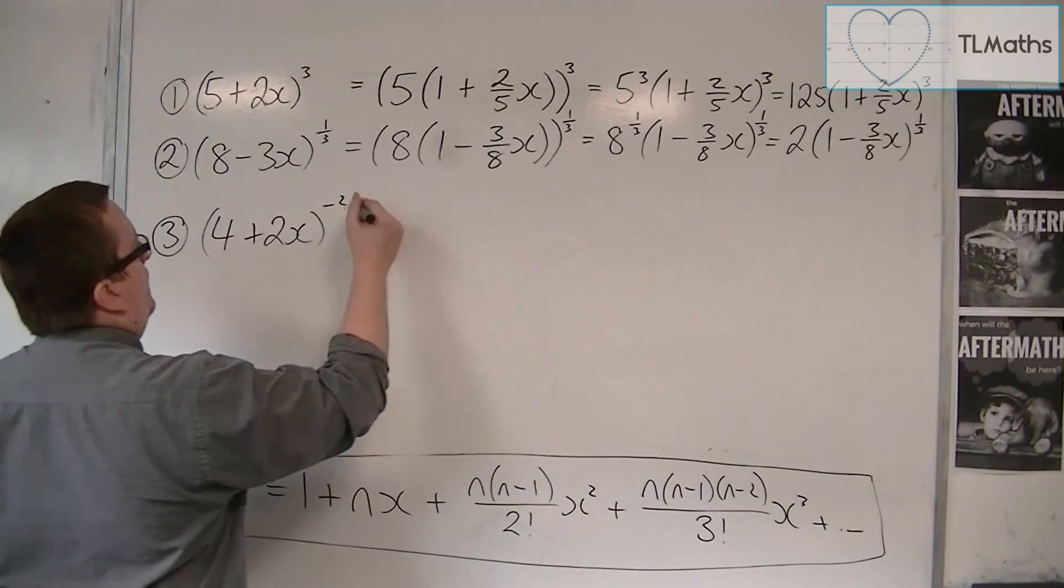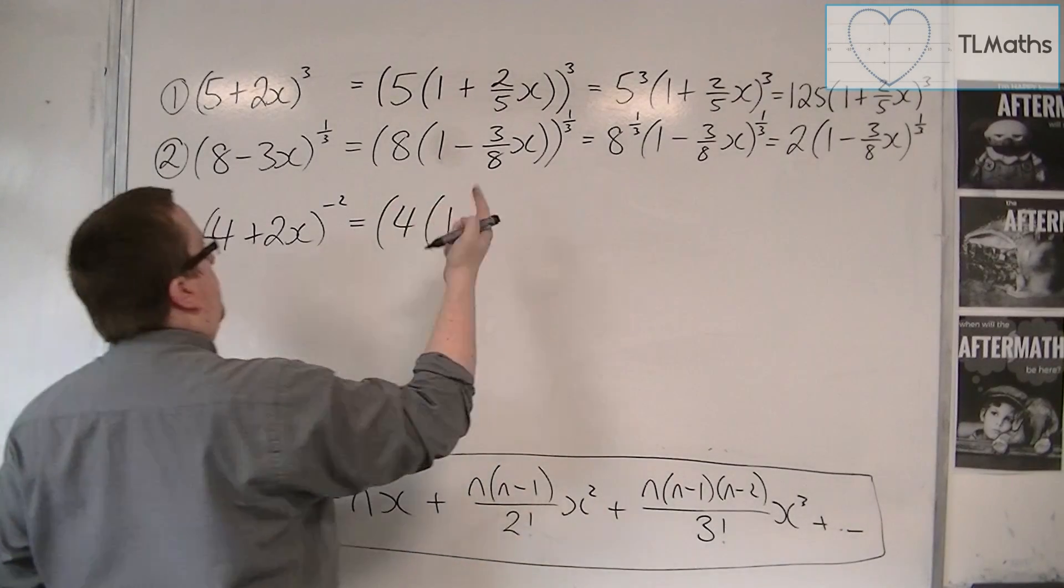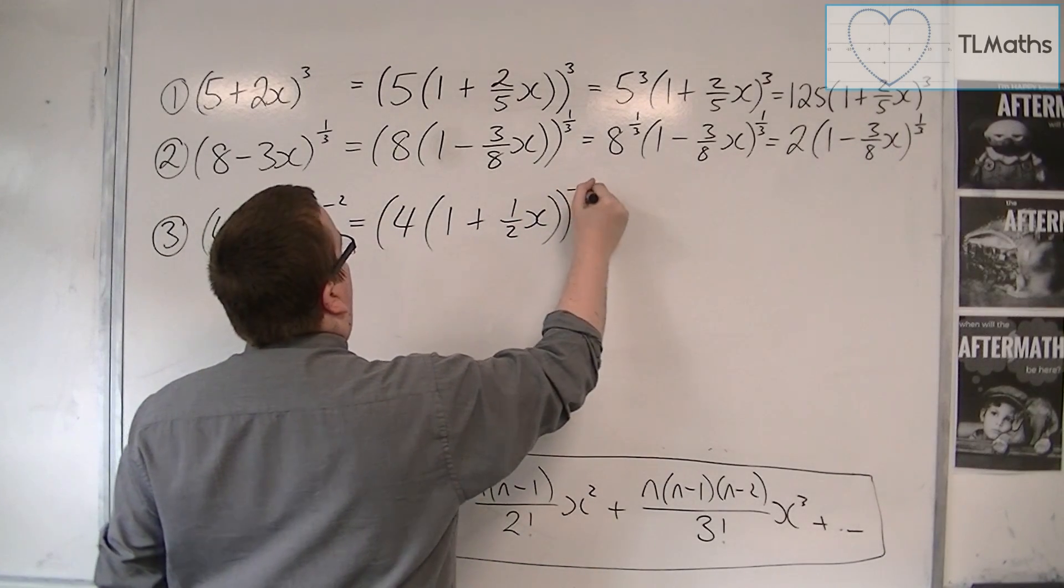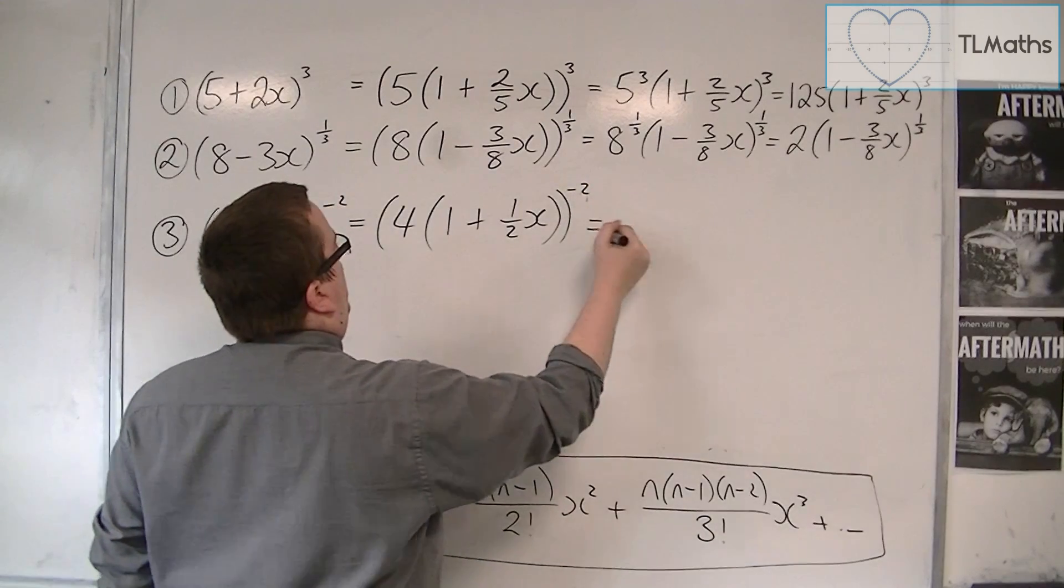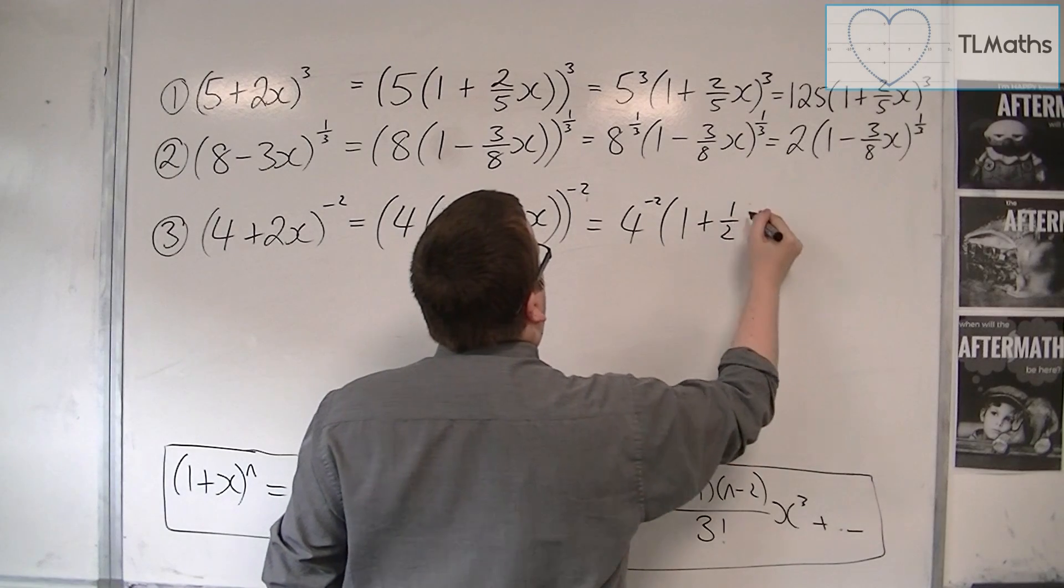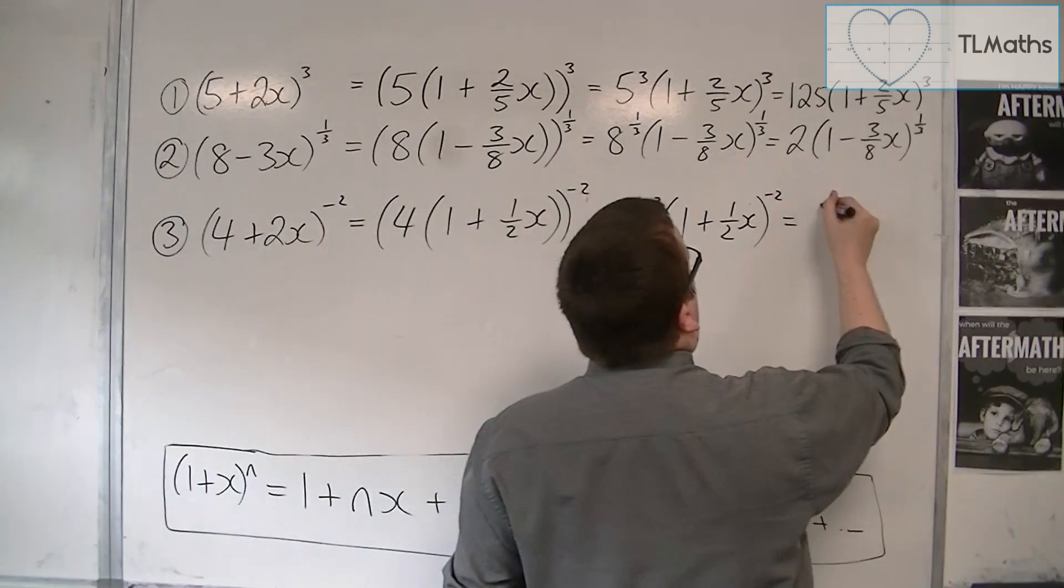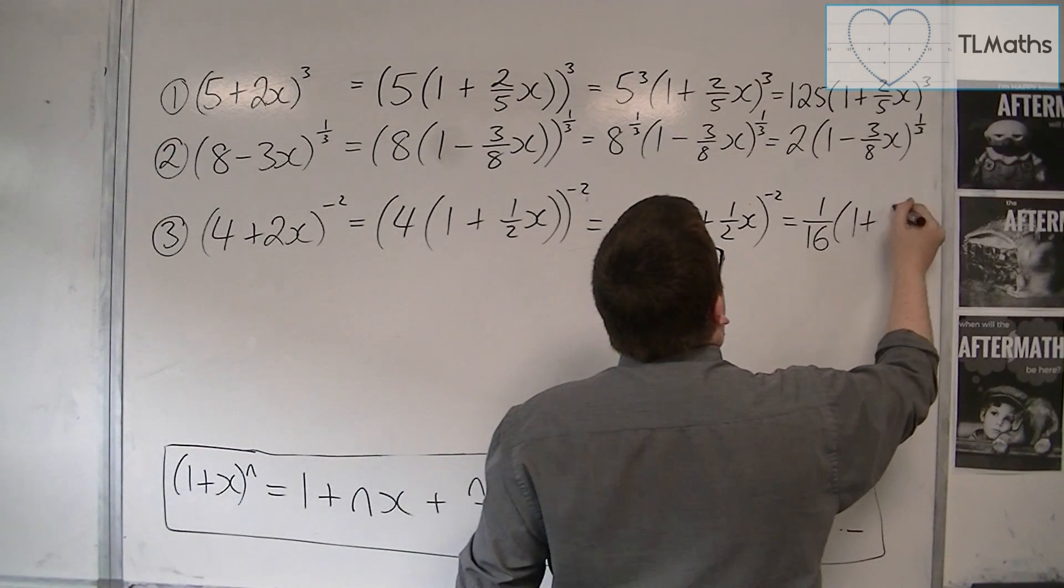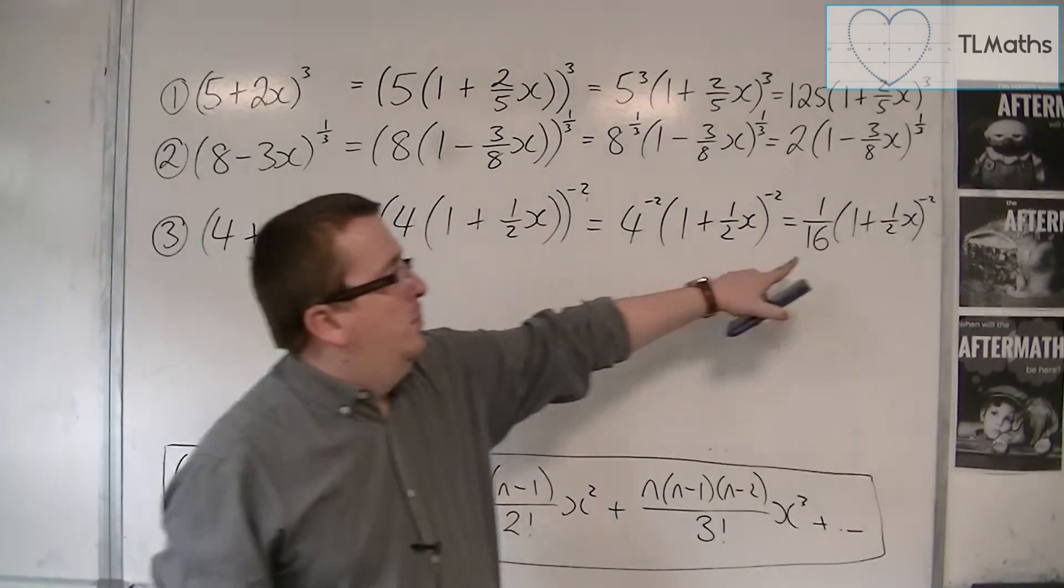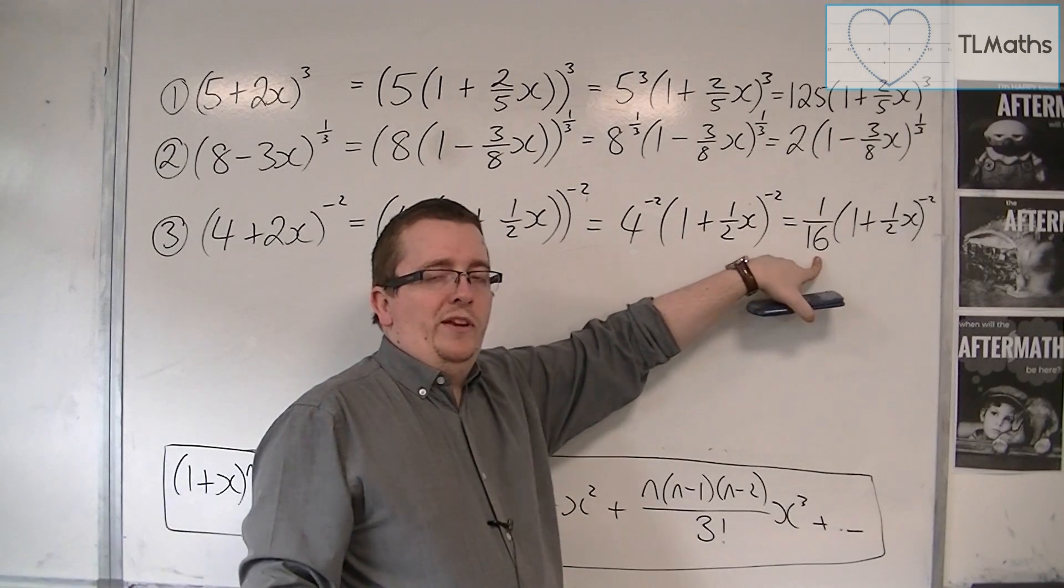This last one, exactly the same process. Take 4 outside, have 1 plus 2 over 4, so 1 half x to the power of minus 2. So, we've got 4 to the power of minus 2, 1 plus 1 half x to the minus 2. 4 to the minus 2 is 1 over 16, 1 plus 1 half x to the minus 2. And so, we could then expand the 1 plus 1 half x to the minus 2 as far as we need to go, and then multiply everything by 1 sixteenth.